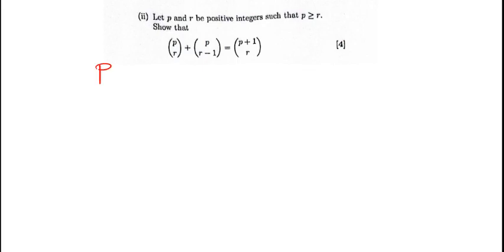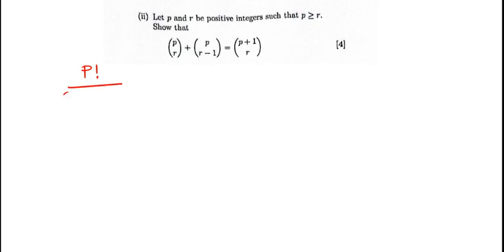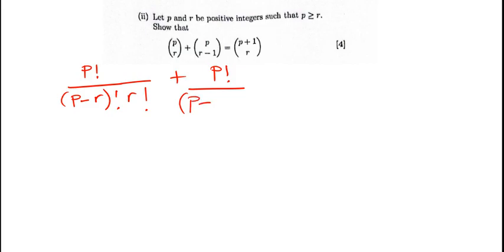Let's expand it a little bit, starting with the first one. We have p choose r, which means p factorial divided by the difference of p and r factorial, and then r factorial. For the second part, p choose r-minus-one means p factorial over p minus r minus one — so that would be p minus r plus one — factorial, and then r minus one factorial. This is the left hand side.